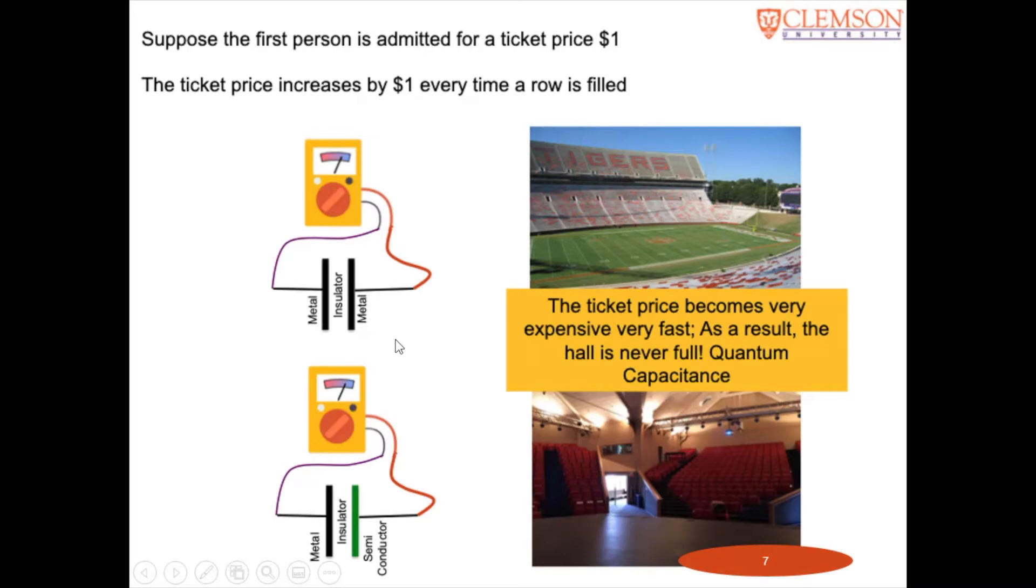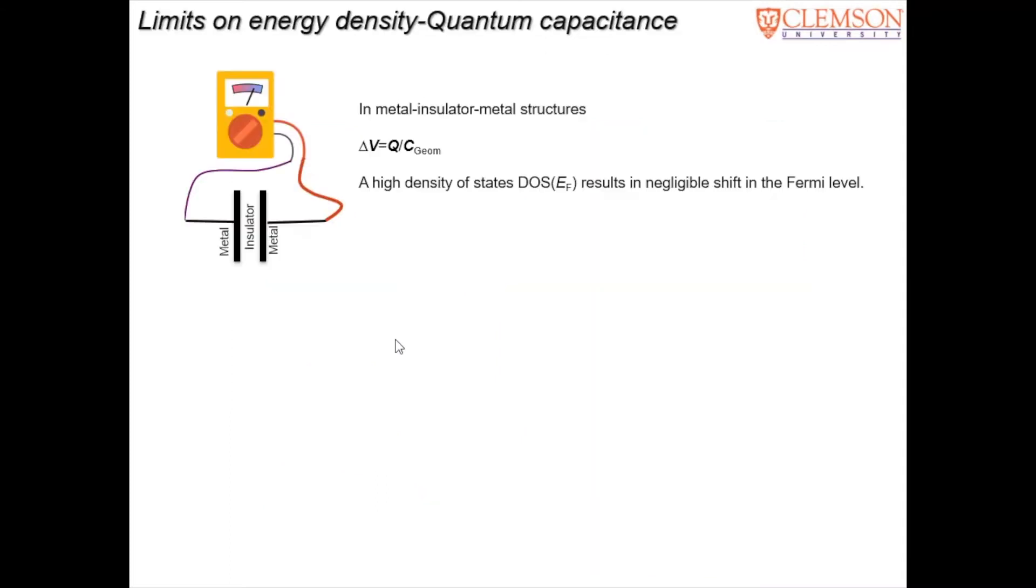In a metal, there are a lot of number of seats within each row. So the ticket price every time you admit a new charge doesn't go up drastically. But in case of a semiconductor, the ticket price goes up. So it's not energetically advantageous. So in other words, if you put this into equations, in case of a metal, there is no extra voltage drop coming in because metals have a high density of electronic states at the Fermi level.